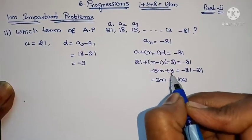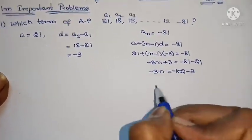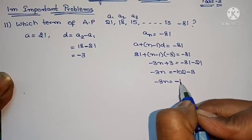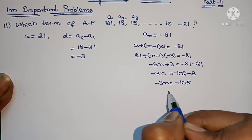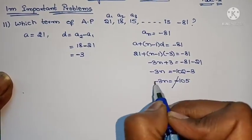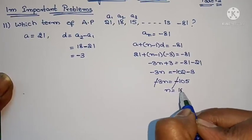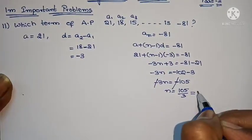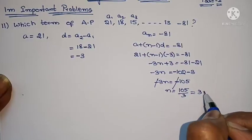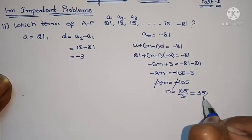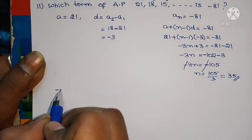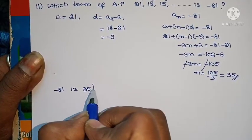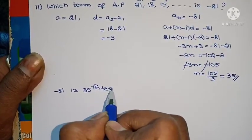Then -3 to the other side gives minus 3. So -3n equals -105. Cancelling, n equals -105 by 3 equals 35. Therefore, -81 is the 35th term of the AP.